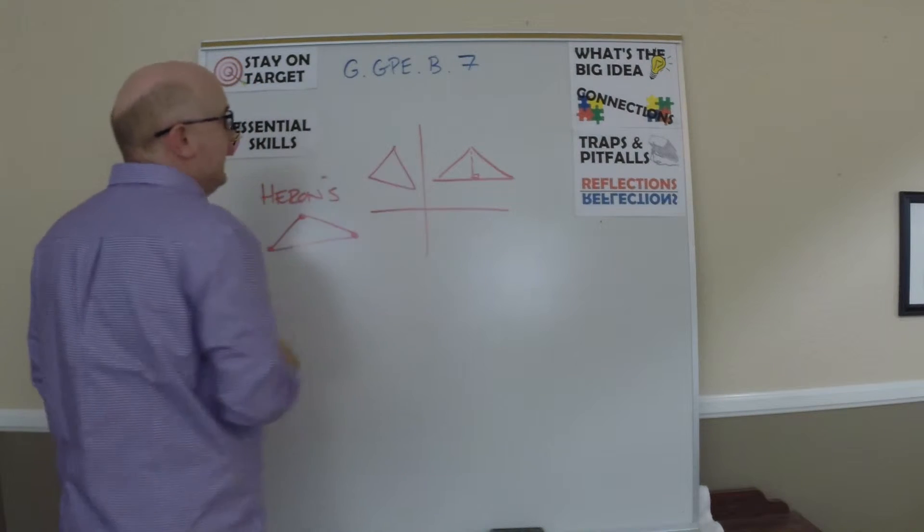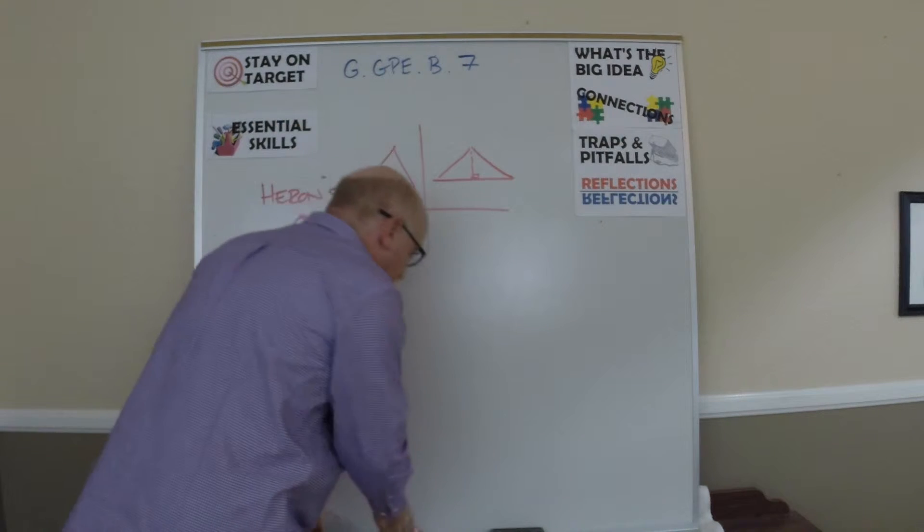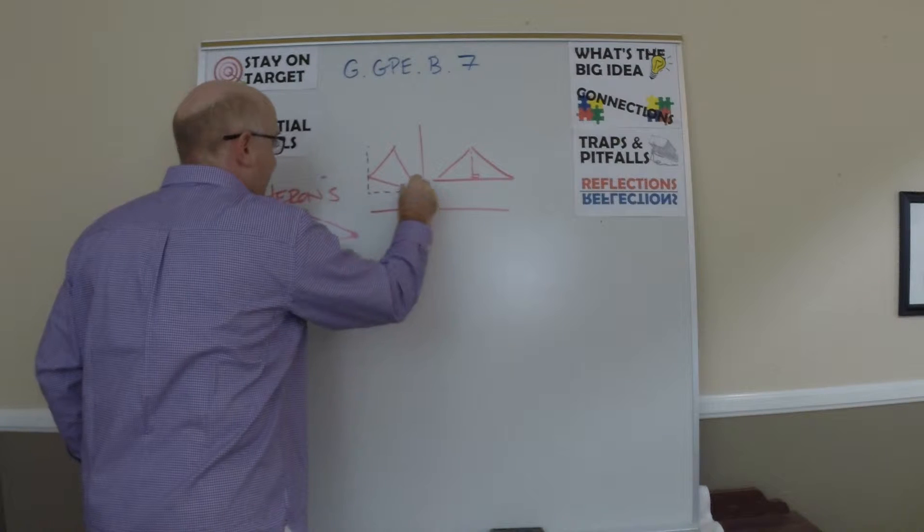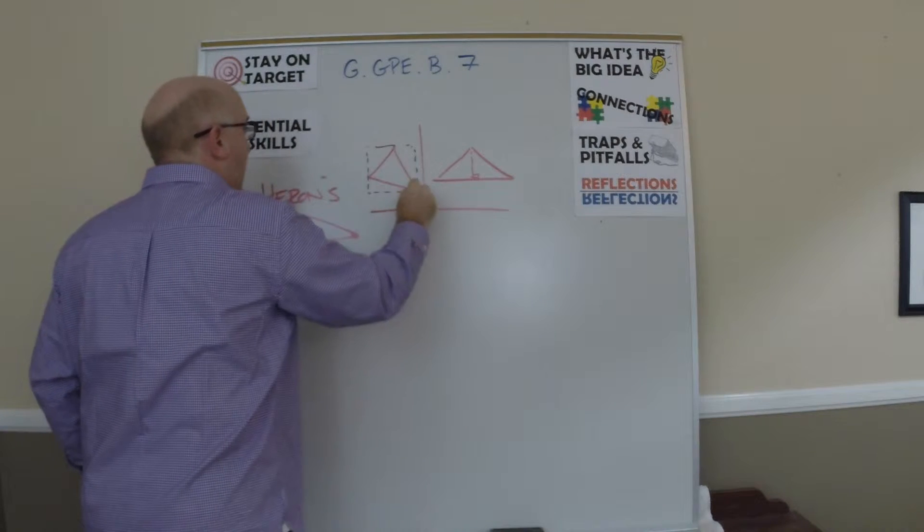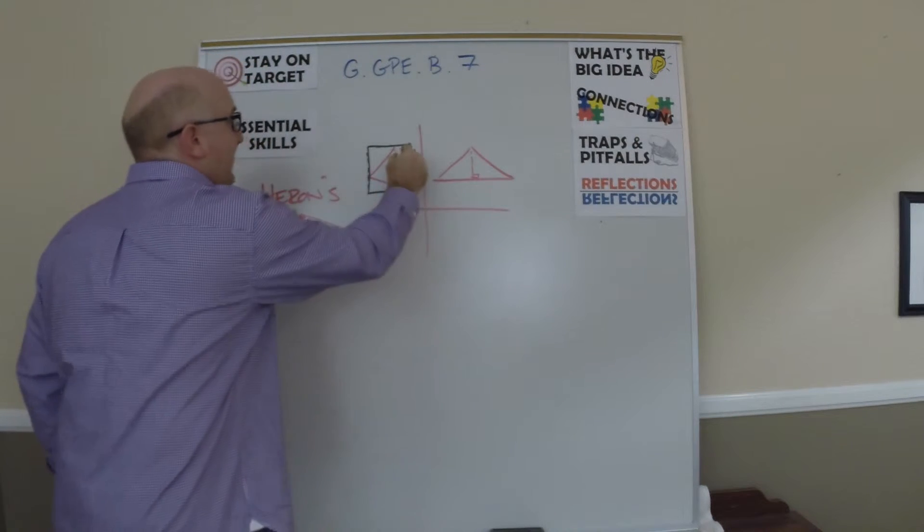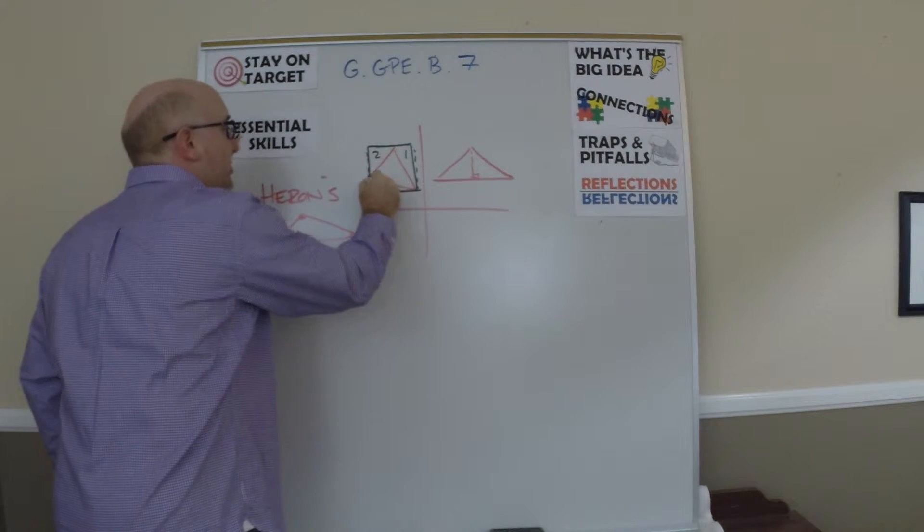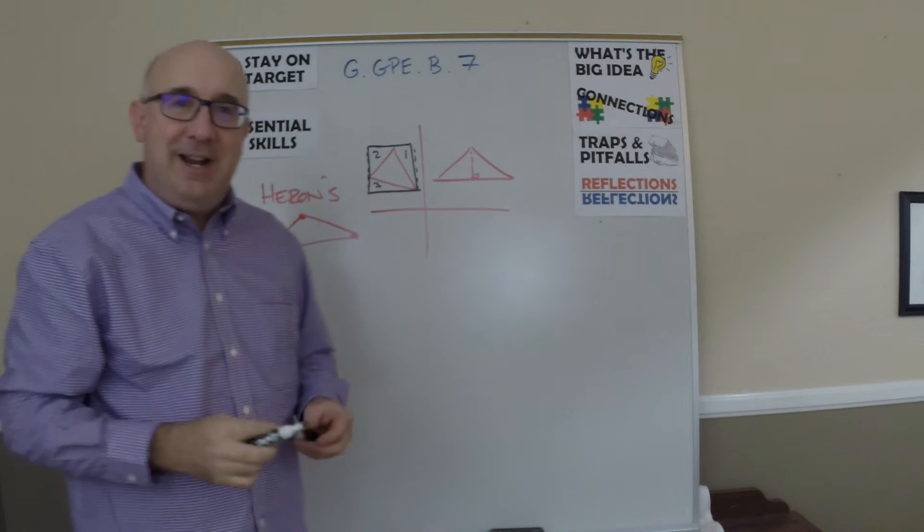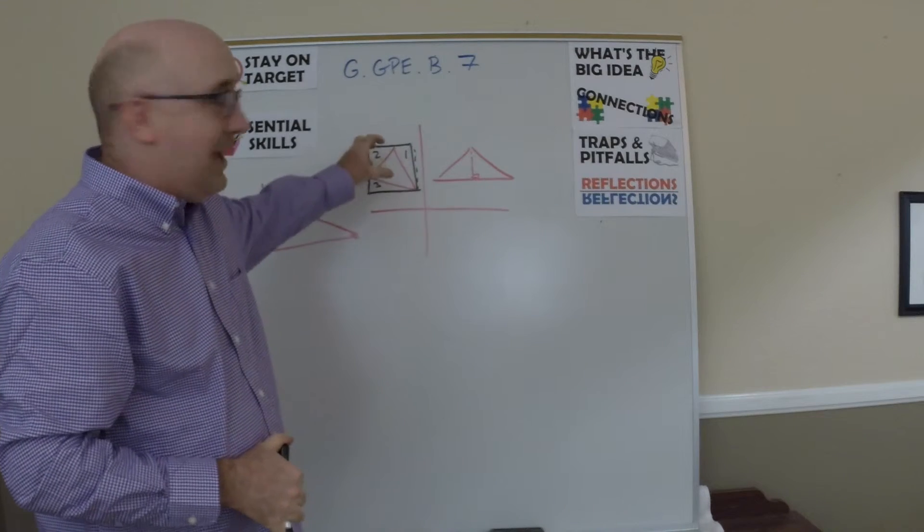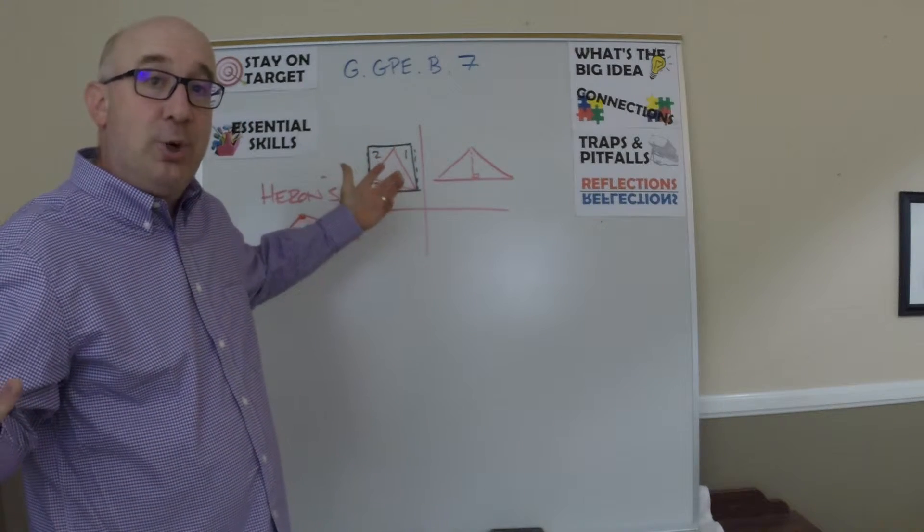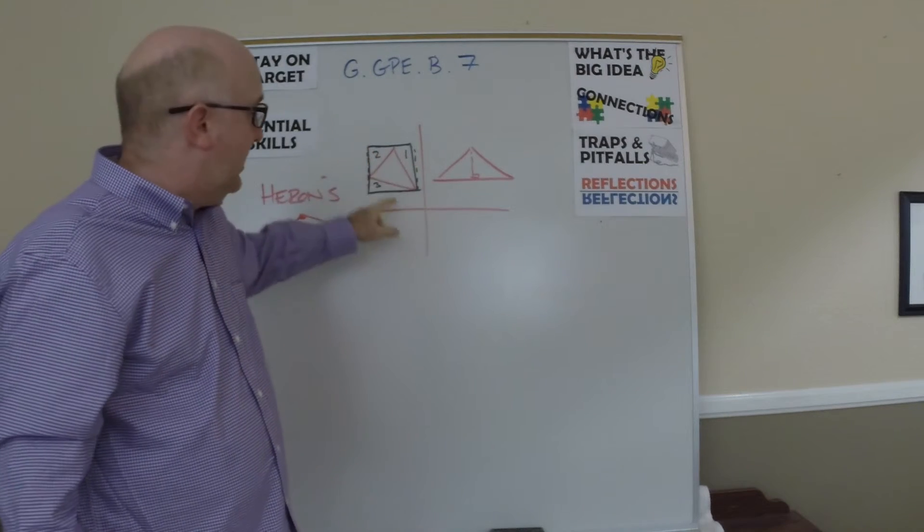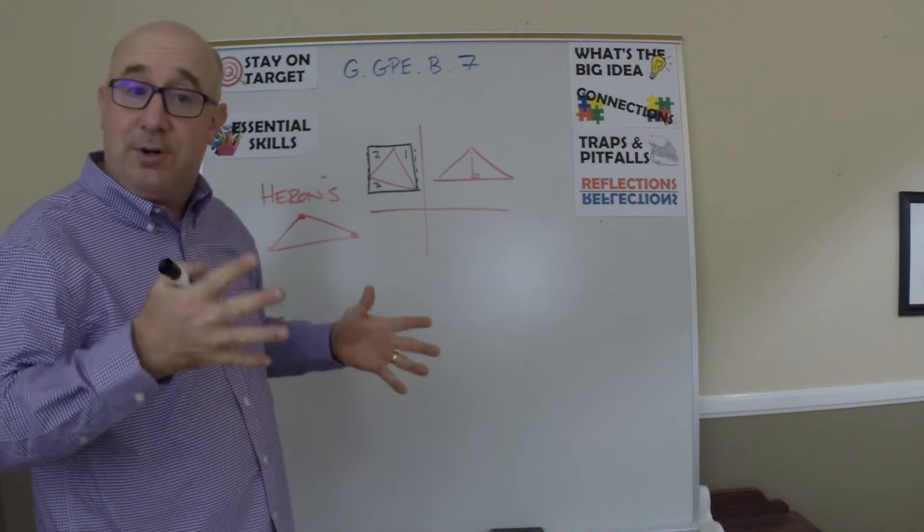This would enclose that triangle in a box. You could find the easier regions—those three regions are all right triangles—so it's easy to find the area. Subtract that from the total box or total rectangle, and you'll be left with what's in it. A nice way to do it when you are not horizontal or vertical.